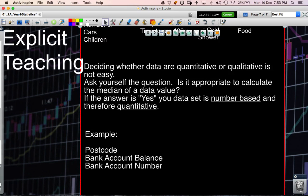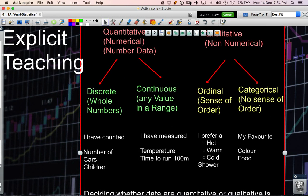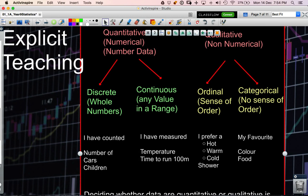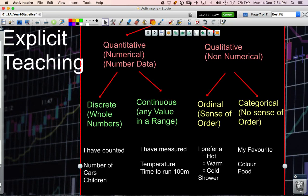And bank account numbers, if you just think about that, a bank account number is just a number which identifies your bank account. It doesn't make sense, you can't create a mean of those particular values. So again that would be qualitative or categorical.